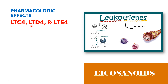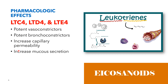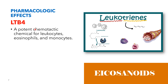LTC4, LTD4, and LTE4 — the cysteinyl leukotrienes — are considered to be potent vasoconstrictors. They are potent bronchoconstrictors and cause bronchospasm. They are also considered to be 1,000 times more potent than histamine. They increase capillary permeability and also increase mucous secretion and impair mucous clearance by inhibiting the movement of cilia on airway epithelium.